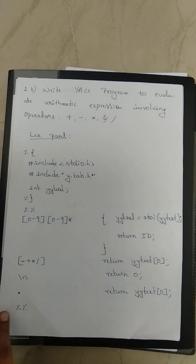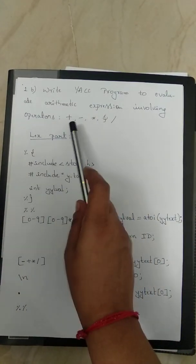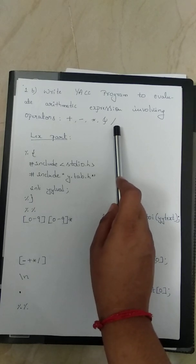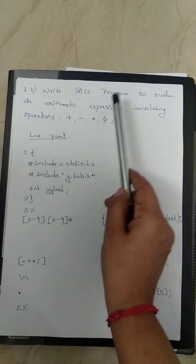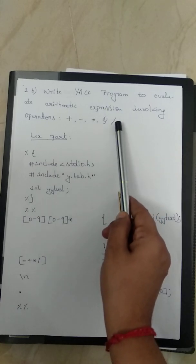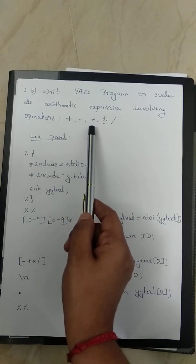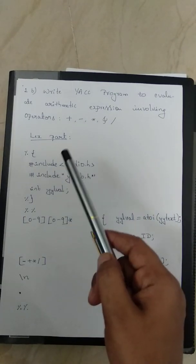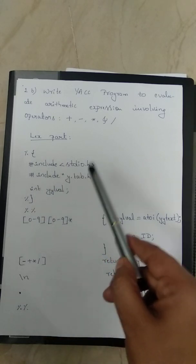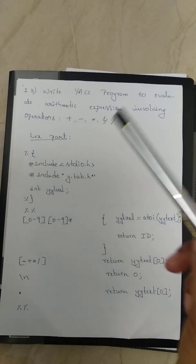Hello everyone. Today we will discuss the question: write a YACC program to evaluate an arithmetic expression involving operators plus, minus, multiplication, and division. As per this question, we have to write a YACC program which can evaluate arithmetic expressions. For example, if we enter 4 plus 5, it should be evaluated and give the result 9.